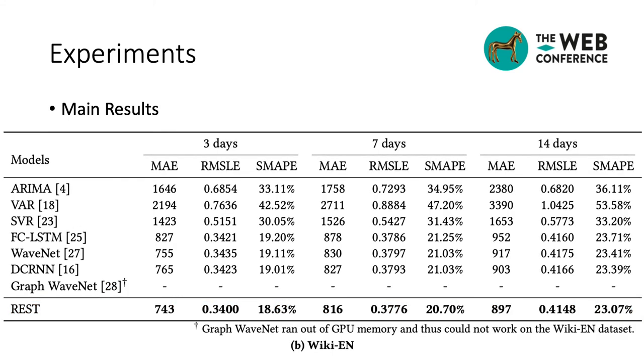On the Wikipedia English dataset, we can also observe similar results. Besides, because the graph WaveNet model demands learning the embedding of time series and comparing them during each epoch, it ran out of GPU memory in our experimental environment, and thus could not get the results.